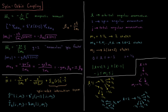For an electron in a p orbital, l=1, so j = 3/2 and 1/2 (i.e., 1+1/2 and 1−1/2). For j=3/2, m_j has four values from +3/2 to −3/2; for j=1/2, m_j = ±1/2 — six total states, which equals 2×(2l+1). For l=2 (d orbital), j = 5/2 and 3/2, giving six and four values of m_j respectively — ten total states, equal to 2×(2×2+1) = 10.